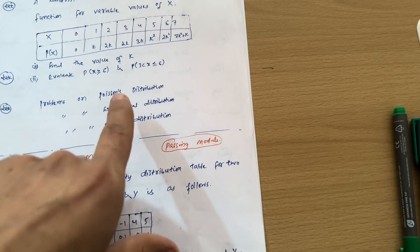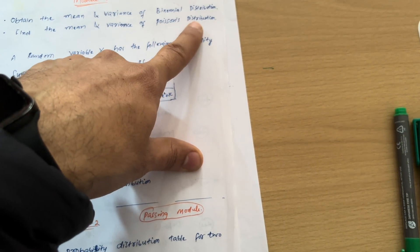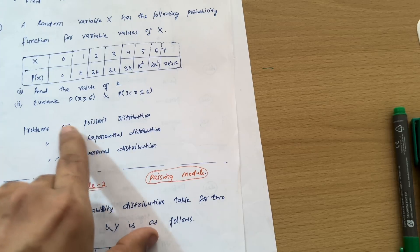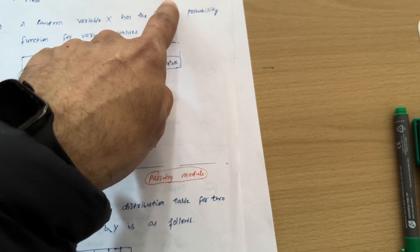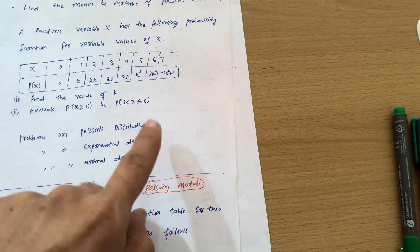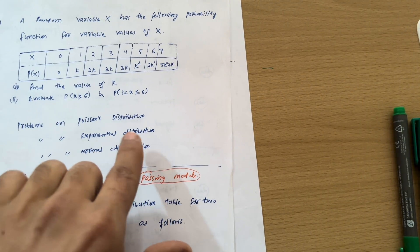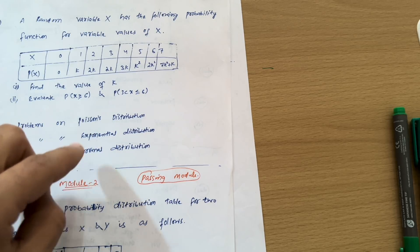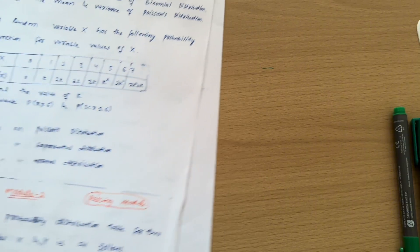Next from Module 1 we have problems on Poisson's distribution. Once you go through the Poisson distribution derivation, you will be able to understand and solve problems on Poisson's distribution. We also have problems on exponential distribution and normal distribution — if you are comfortable, you can go through these two concepts as well. This covers all of Module 1.